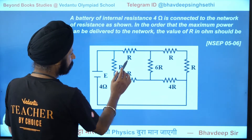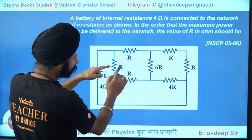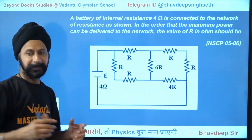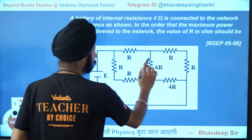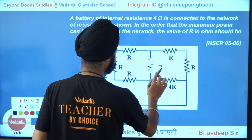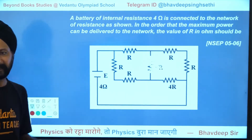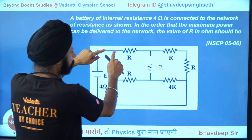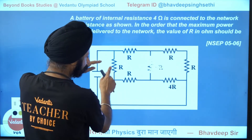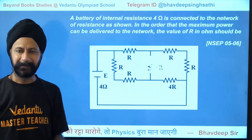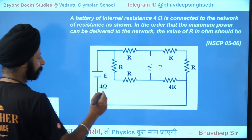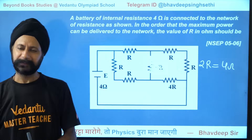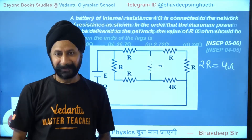Think about this: R over 2R gives a 1:2 ratio, and 2R to 4R is also a 1:2 ratio. So the middle resistor has no meaning — no current flows through it, you can remove it. Once removed, the two branches are in parallel: 3R and 6R in parallel gives 2R. So 2R = 4 ohms, meaning R = 2 ohms.